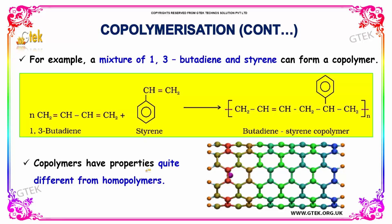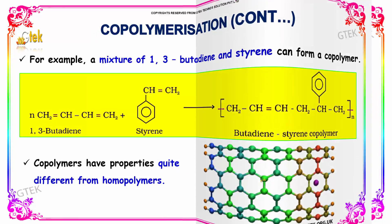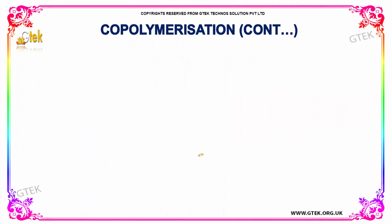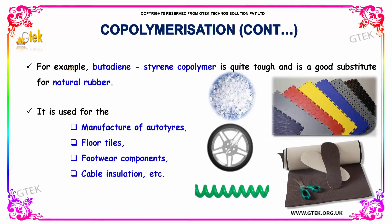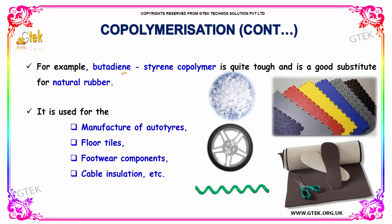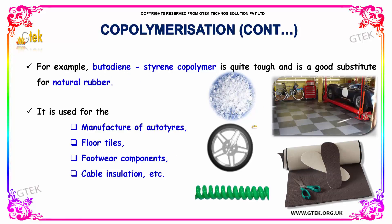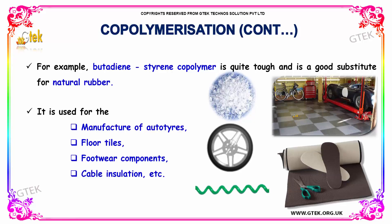Copolymers have properties quite different from homopolymers. For example, this butadiene-styrene copolymer is a very hard and tough substance and is a very good substitute for natural rubber.